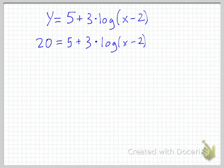So let's do that first. You got to get rid of the 5. 15 equals 3 times log. I'm doing order of operations in reverse order. So then get rid of the 3, we divide to undo multiplication.